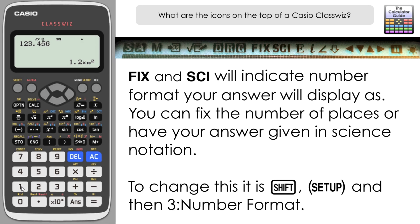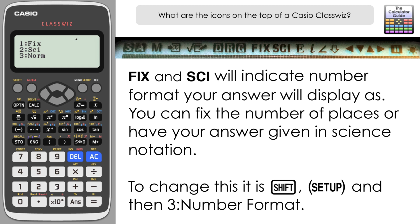Let's try a larger number. Pressing equals, you can see it has displayed just the first two digits in scientific notation — 1.0 times 10 to the power of 8, not showing the 5 further down. To return to normal: Shift, Setup, number format, 3 for Norm, and option 2 allows the maximum number of digits to be displayed. Press 2, equals, and my number is displayed exactly as I inputted it.